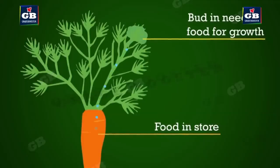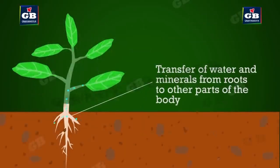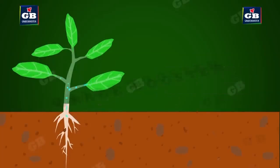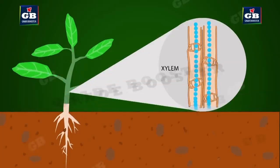For example, in spring season, buds need food material for flowering. Then the phloem transports the food from the stem or root. The transportation of water takes place through xylem tissues in plants. Plant parts like stems, branches, roots, and leaves have xylem vessels and tracheids in them.